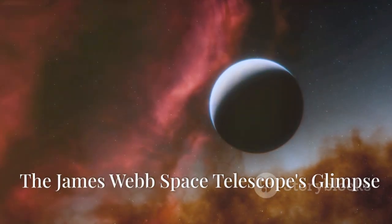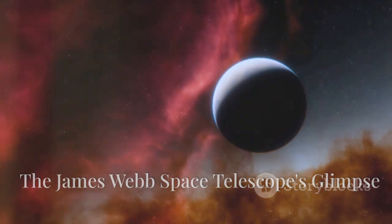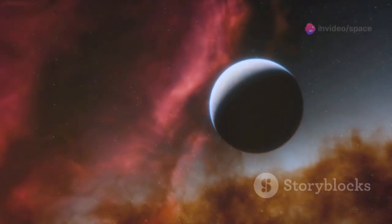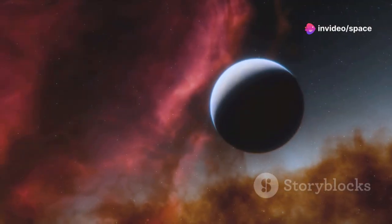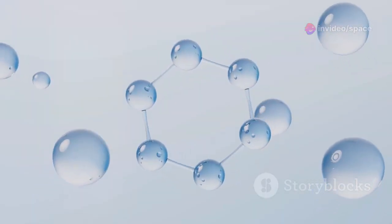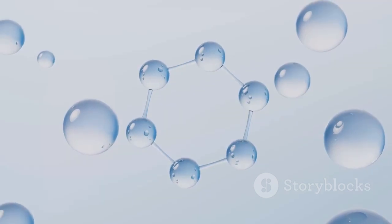The James Webb Space Telescope, our most advanced cosmic observer, has offered intriguing clues about Proxima b's atmosphere. Data indicates the presence of water vapor and methane, two molecules closely associated with life as we understand it.